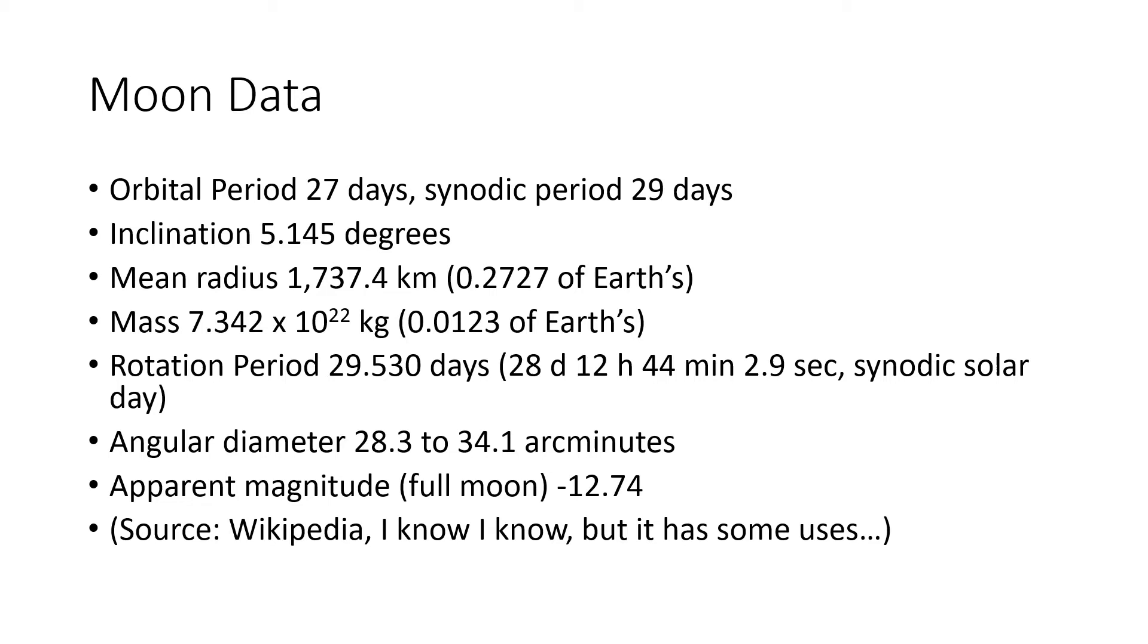The mean radius is 1,737.4 kilometers, which is about 0.27 of the Earth's, so about 27 percent of the Earth's. The mass is 7.342 times 10 to the 22 kilograms. If you remember from our first lab with our numbers, your scientific notation, this is positive, so that means it's very big. This is 7.342 times, and then we add times ten with all these 22 zeros behind it.